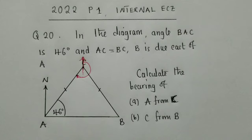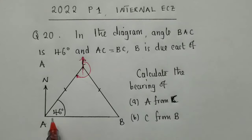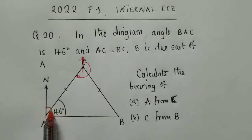Now with bearings, there are so many methods that you can use provided you know the properties. So, they have said B is due east of A. So, this is a straight line, and this is the north.